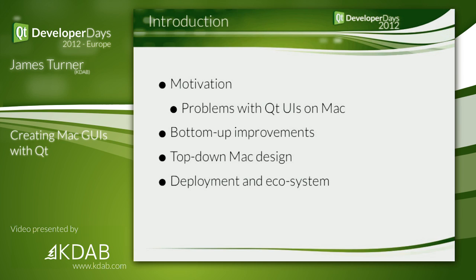We're going to look at some fixes — mostly bottom-up things you can change now in your application to make it more Mac-friendly, Mac-compatible, to make people send you fewer complaint emails. We'll talk about top-down thinking for a new program or rewrite, which is ideal but less useful if you already have a large code base. And we'll talk about deployment and ecosystem issues to help you be a good Mac citizen.